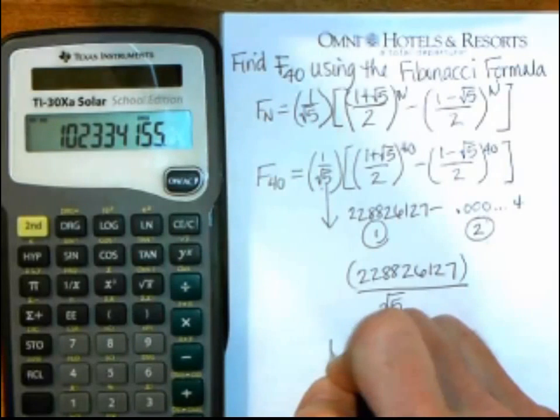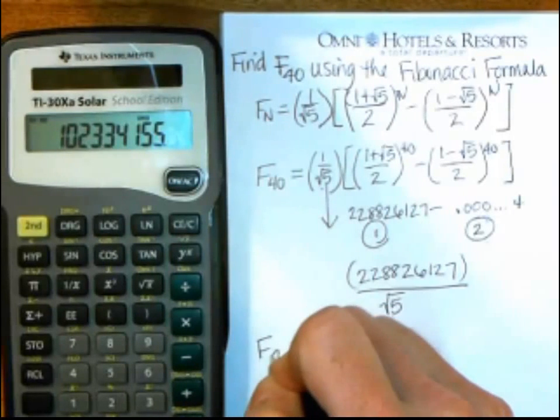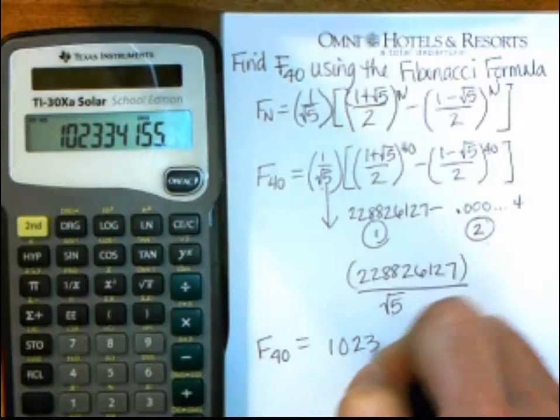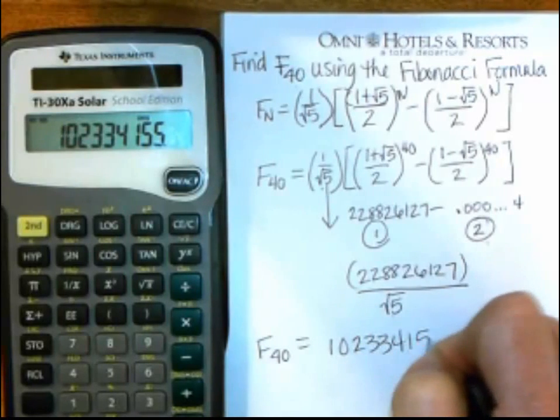And so I get for F sub 40, it's a very large number, but 102334155.